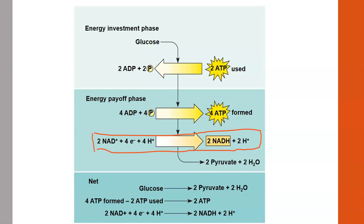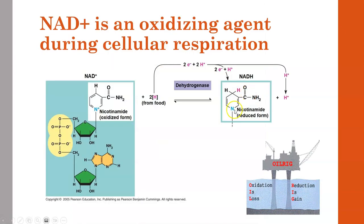NAD and NADH are important players we'll see again. NAD is an oxidizing agent in cell respiration, meaning it has the ability to take electrons from another compound—it gets those electrons from the glucose or derivatives of glucose. Ultimately we get NADH, which is basically an electron carrier. NADH will carry those electrons to the final stage of cellular respiration that happens inside the inner membrane of the mitochondria.